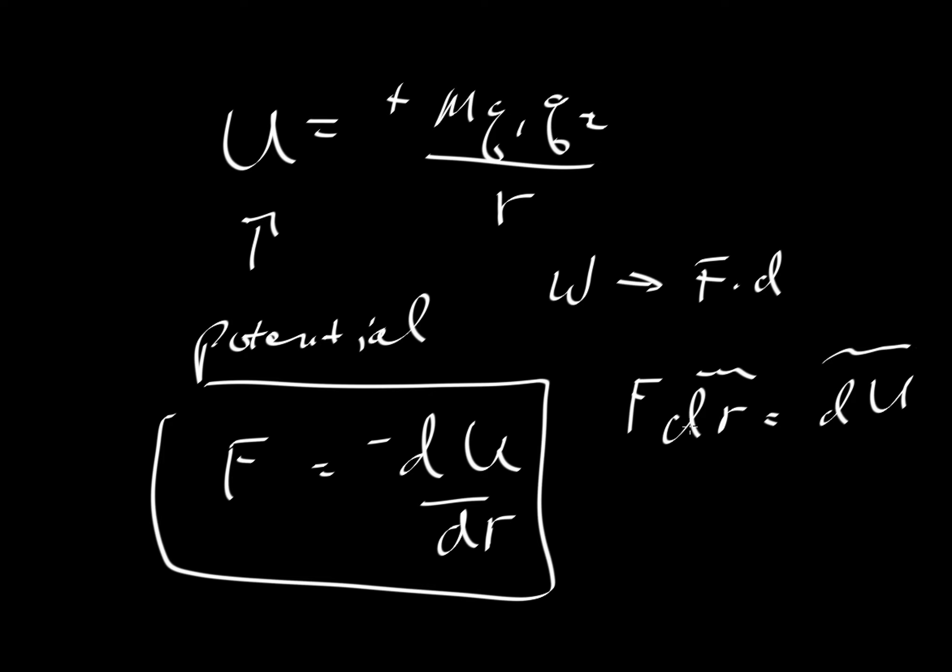Any work that's going to be done by this system is going to decrease the potential energy. And so that's why we have that negative sign there. You can also do the derivative with respect to time. And that instead of force would be power. So power would be the derivative with respect to time. And that would also be negative.